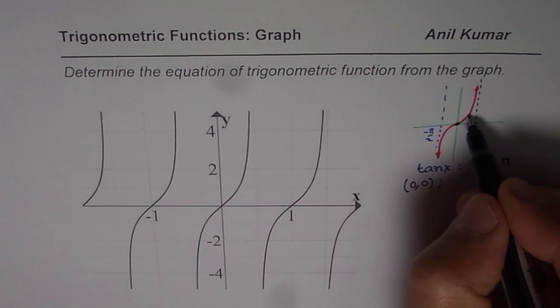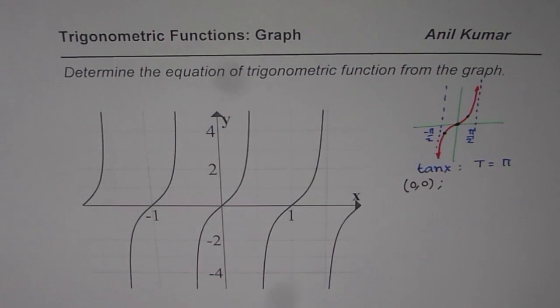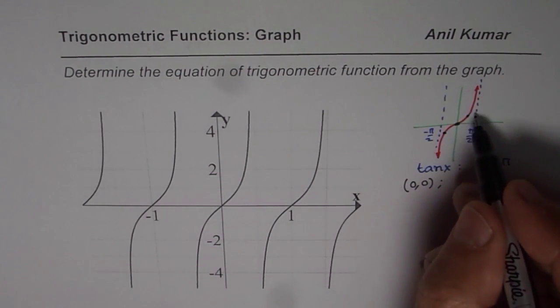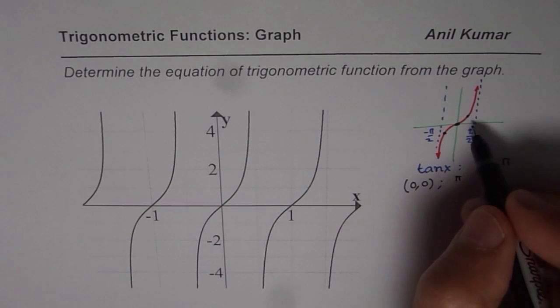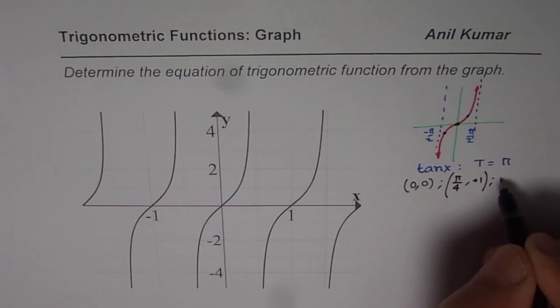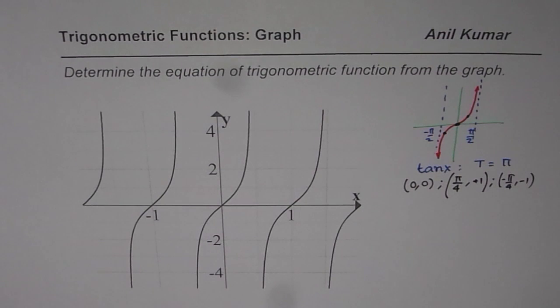The other points are the points when we have values plus 1 or minus 1. Now that is for tan of 45°, right? So we have π/4, tan of 45. We have plus 1, right? And at minus π/4, the value of tan is minus 1.